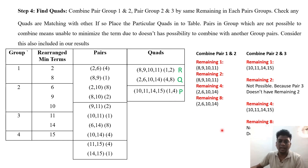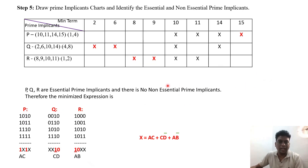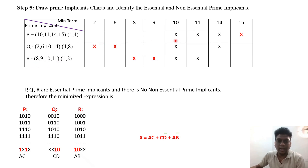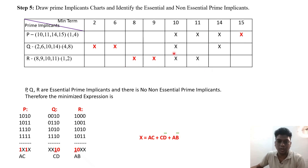We label the quads as P, Q, R. P covers {10,11,14,15}, Q covers {2,6,10,14}, and R covers {8,9,10,11}. In the final step we draw the prime implicant chart table. The minterms 2, 6, 8, 9, 10, 11, 14, and 15 are written as columns. The prime implicants P, Q, R are the rows, and we mark which minterms each covers — for example P covers 10,11,14,15 and Q covers 2,6,10,14, and R covers 8,9,10,11.